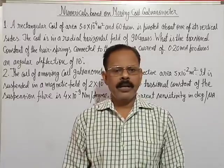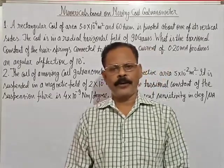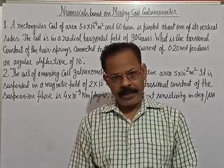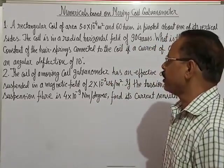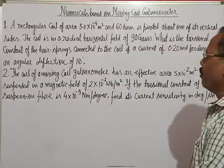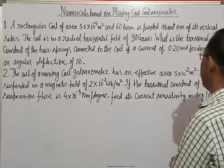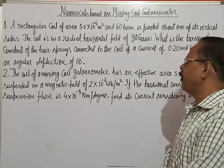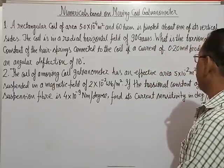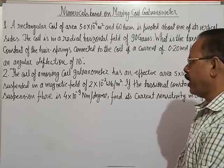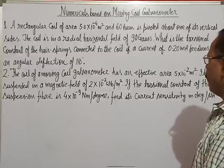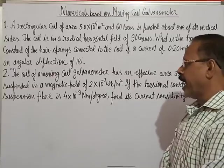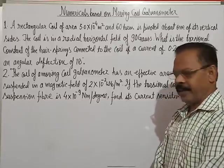Hello students, I hope you are all good and staying at home. Let us start numericals based on moving coil galvanometer. Question number one: a rectangular coil of area 5×10⁻⁴ meter square and 60 turns is pivoted about one of its vertical sides. The coil is in a radial horizontal field of 90 gauss. What is the torsional constant of the hair spring connected to the coil if a current of 0.20 milliampere produces an angular deflection of 18 degrees?